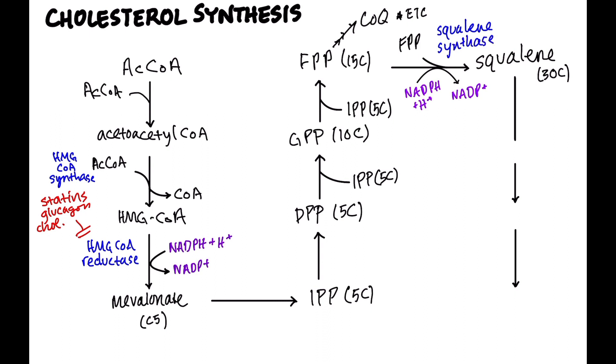So squalene then gets converted to something called lanosterol. And lanosterol in eukaryotic organisms will then get converted to 7-dehydrocholesterol. Now, in fungi, lanosterol will get converted to ergosterol. And do you remember the name of the enzyme that does this? It's called 14-alpha-D-methylase.